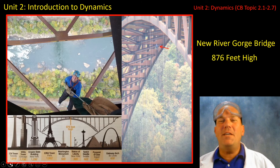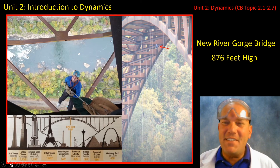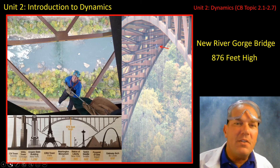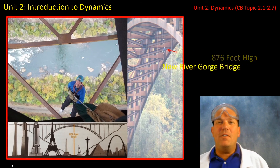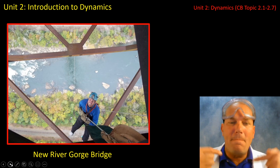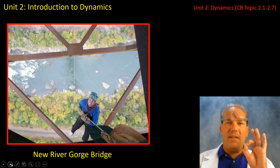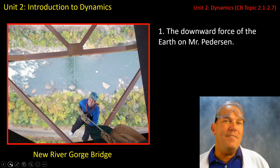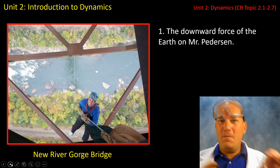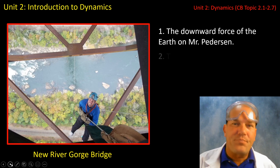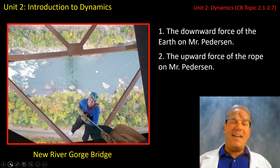Here's something cool — this is me rappelling off the New River Gorge Bridge in West Virginia, an 876-foot-high bridge that closes once a year for outdoor enthusiasts. Let's look at the forces acting upon my body. I am on a rope — that is the only thing I am in contact with. So the first force is the downward force of the earth on me, which is a long-range or field force. The only other force is the upward force of the rope on me, which is a contact force.